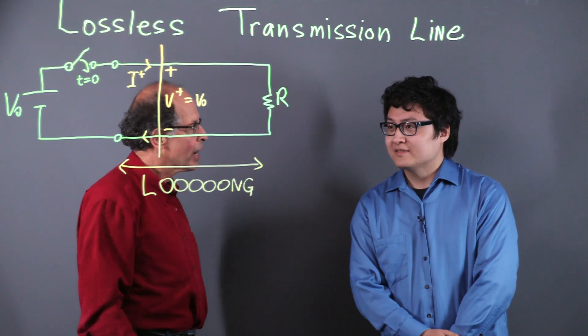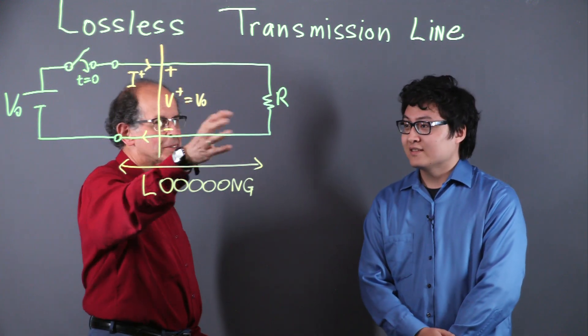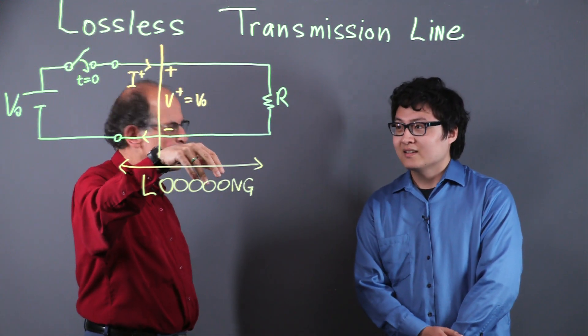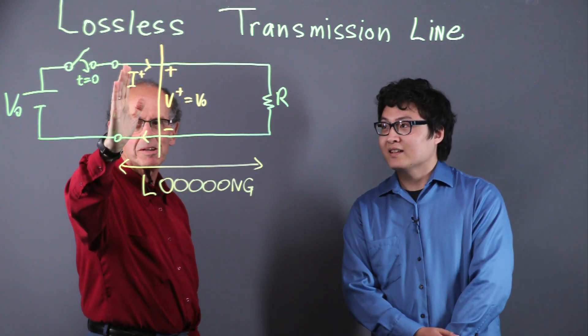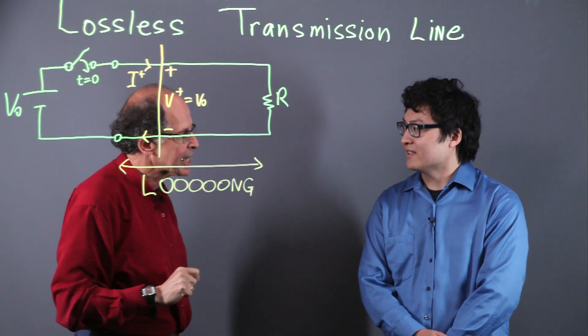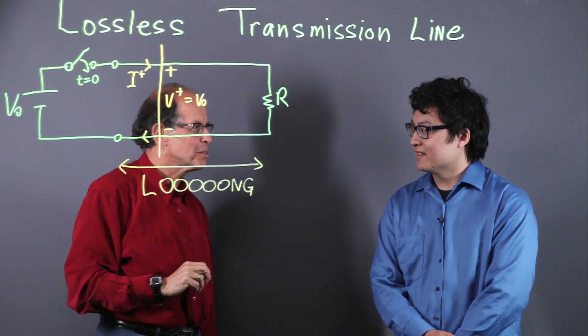Yeah, the electric field somehow has to travel down through the wire. Maybe not, but it has to travel from the source to the load. It can't travel faster than the speed of light.